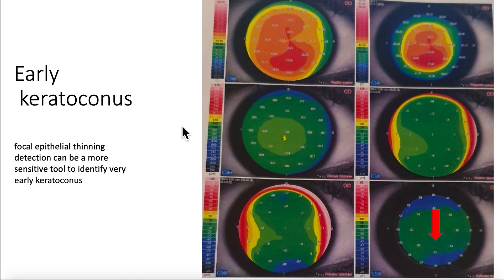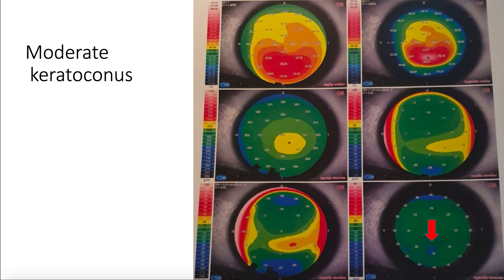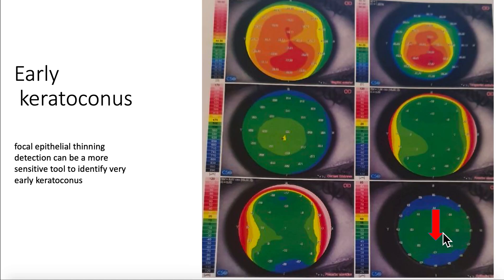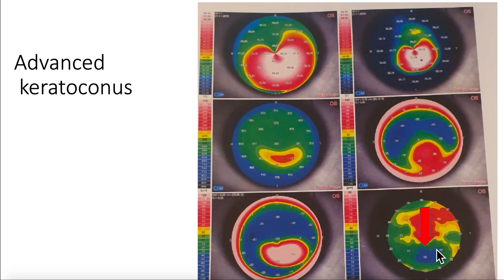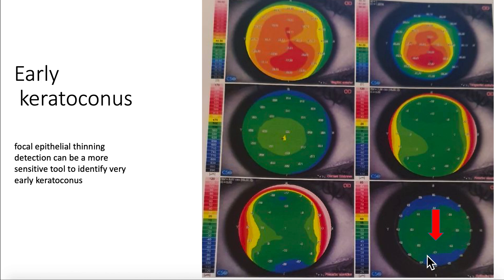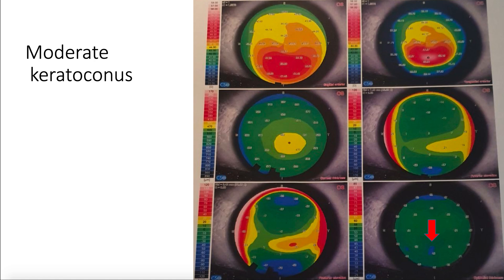In early keratoconus, we see a small focal epithelial thinning. In moderate keratoconus, we have a donut image area and the difference between the thinnest and thickest point is larger than in the early case. In advanced keratoconus, the thinnest point is even thinner, and the epithelial delta between the thinnest and thickest point is higher and higher. By comparing this delta, we can monitor the progression of keratoconus.